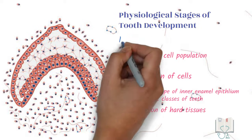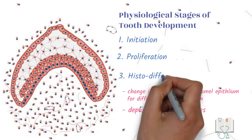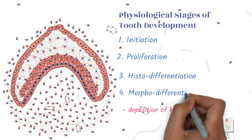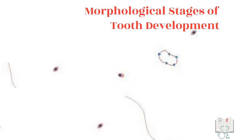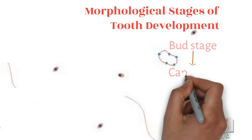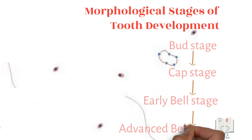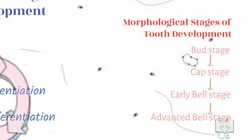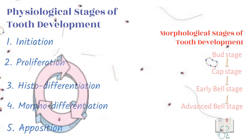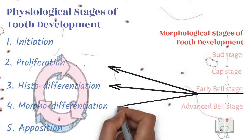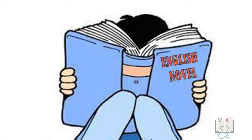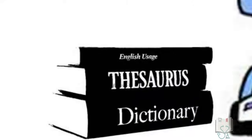The stages are initiation, proliferation, histodifferentiation, morphodifferentiation, and apposition. One characteristic of these stages is that there is overlapping of stages. Unlike morphological stages, where the tooth germ finishes one stage then only enters the next with no overlap, in physiological stages the tooth germ in the early bell stage is going through various physiological stages at once. For better understanding of the physiological stages, we will keep referring to the morphological stages.